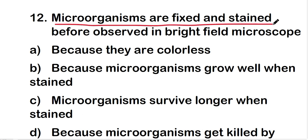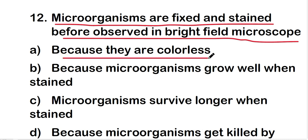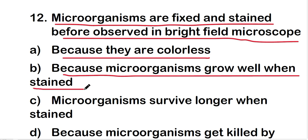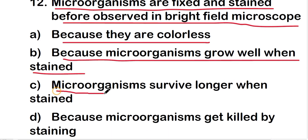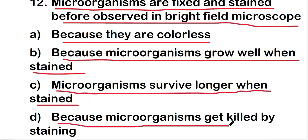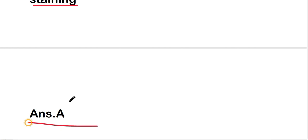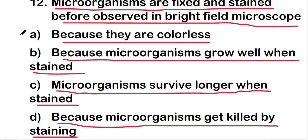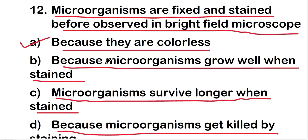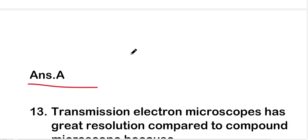Microorganisms are fixed and stained before being observed in a bright field microscope because: they are colorless, microorganisms grow well when stained, microorganisms survive longer when stained, or microorganisms get killed by staining? The right answer is option A — because they are colorless. Microorganisms are fixed and stained before observed in a bright field microscope because they are colorless.